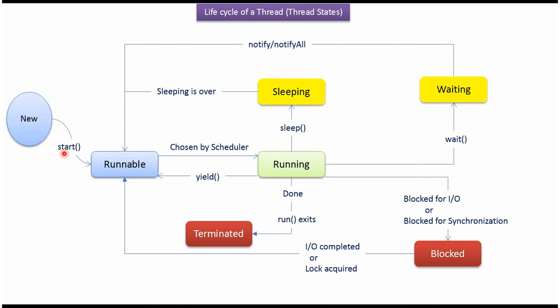When the start method is called on a new thread, the thread will go from new state to runnable state. The scheduler will pick up the runnable thread and run it, so the thread will go from runnable state to running state.